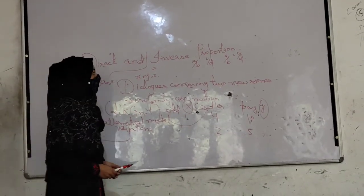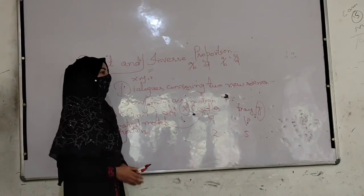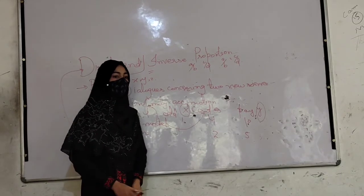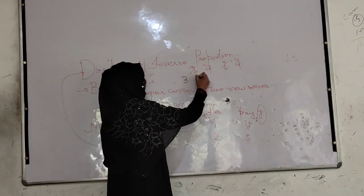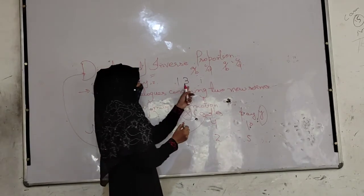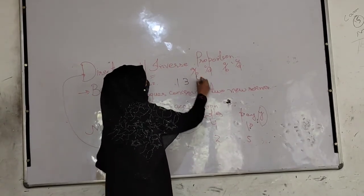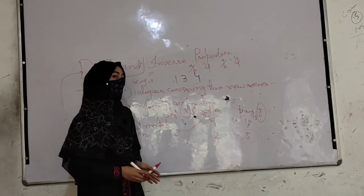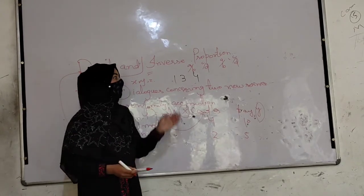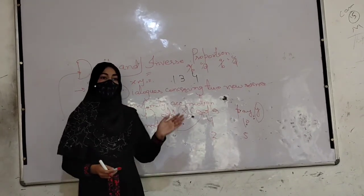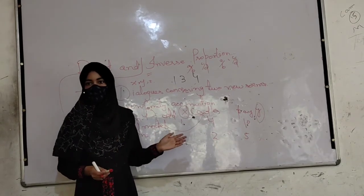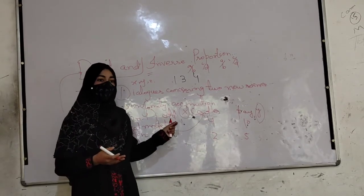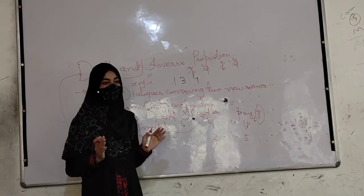Inverse proportion: imagine you are working in an industry. You are the only one person and you have to make three doors. You are taking four days to complete those three doors. Now imagine another person visits and joins the work. Will the task take more time or less time? Obviously less time, because you will share the work and finish the task sooner.